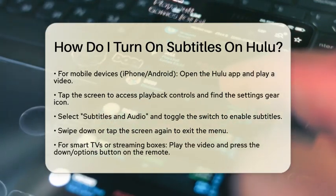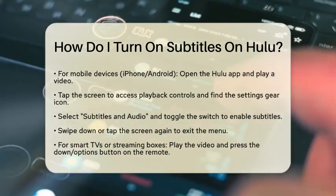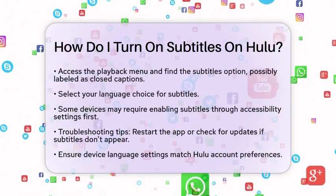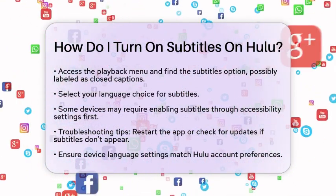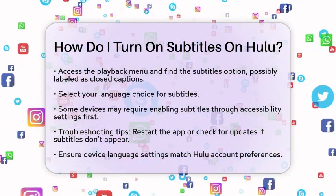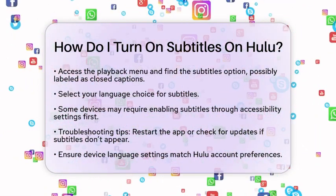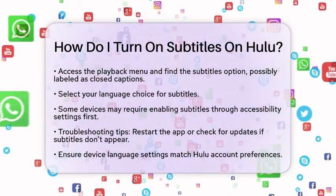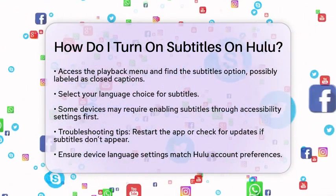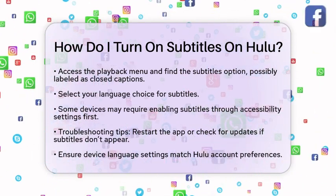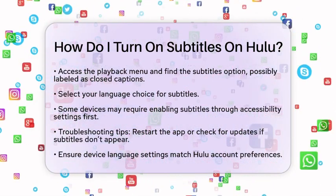If you are using a smart television or a streaming box, the process is a bit different. Start playing your video, then press the down or options button on your remote control. This will bring up the playback menu. Look for the subtitles option, which may also be labeled as closed captions. Select your language choice from there. Keep in mind that some devices, like Roku or Fire TV, may require you to enable subtitles through the app's accessibility settings first.